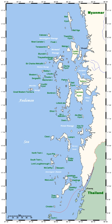Archipelagos are often volcanic, forming along island arcs generated by subduction zones or hotspots, but may also be the result of erosion, deposition, and land elevation. Depending on their geological origin, islands forming archipelagos can be referred to as oceanic islands, continental fragments, and continental islands.